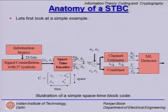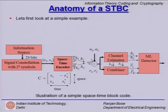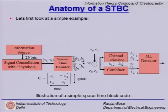S1 goes through a channel gain of H1 whereas S2 undergoes a channel gain of H2, and we receive it with additive white Gaussian noise N1 added — but this is done in the first time slot. As the name suggests, it is a space time block code: the space element comes from the antennas and the time comes from the different time slots. So we sent out S1 and S2 from the 2 antenna elements in the first time slot.